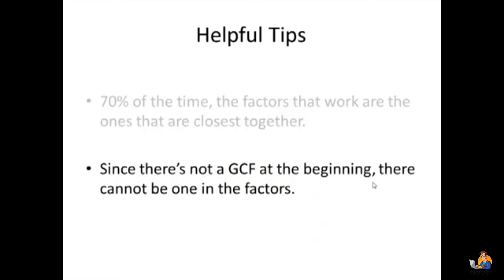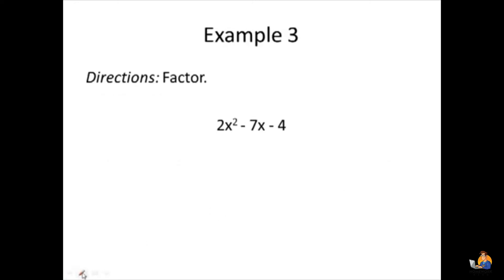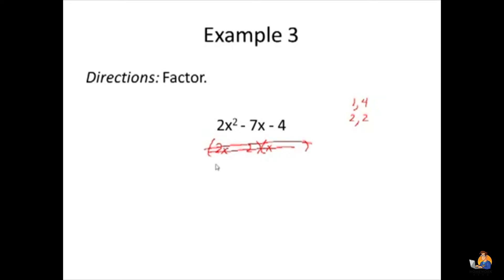Another helpful tip: if there's no GCF at the beginning of the problem, then there can't be one in the factors. For example, we want our factors to be 2x and x. The factors of 4 are 1 and 4, or 2 and 2. If we tried 2 and 2, a 2 would go in each factor, but that creates a GCF within a factor — and since there was no 2 to factor out at the very beginning, that can't be right. So it must be 4 and 1.